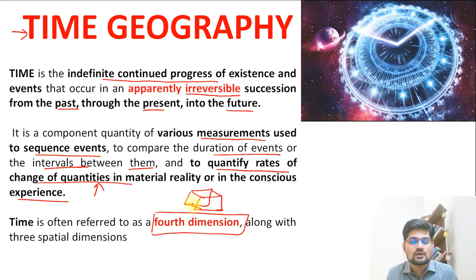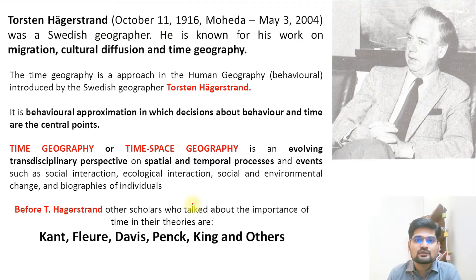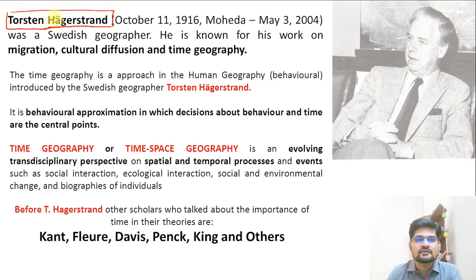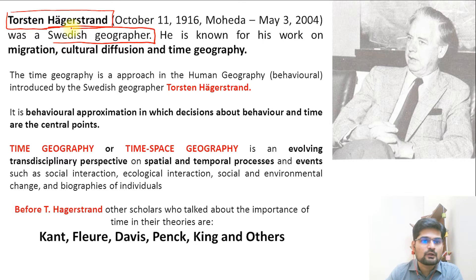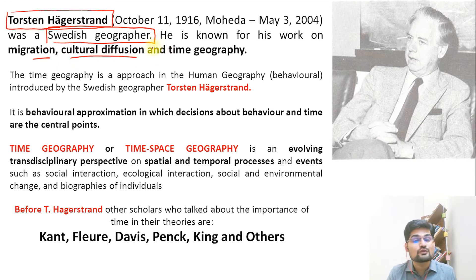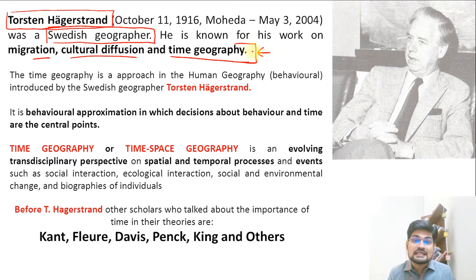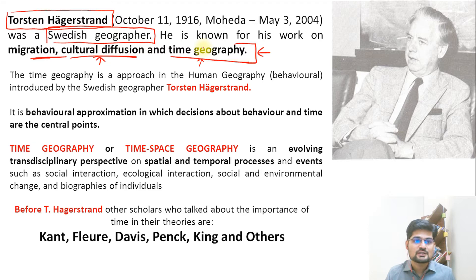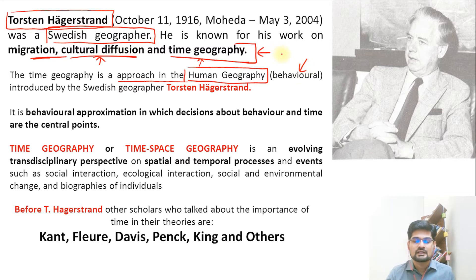Space and time are the basic components of geography, but in time geography the perspective is from the lens of time — we look at space through the lens of time. How does space look and how can we measure activities on space through time? Torsten Hägerstrand was a Swedish geographer who contributed to migration, cultural diffusion (the innovation of diffusion model), and time geography — three key subjects in the discipline of geography.